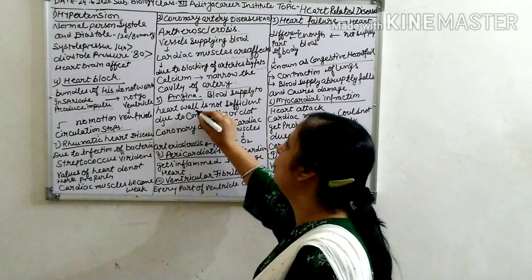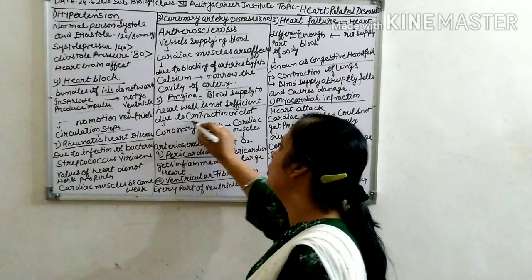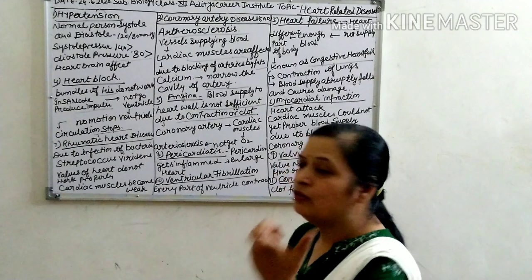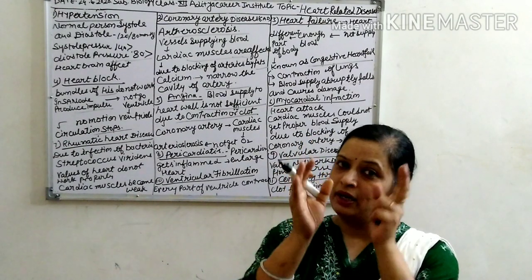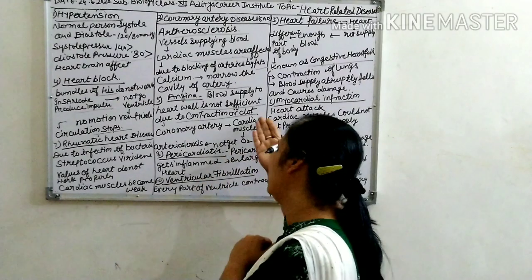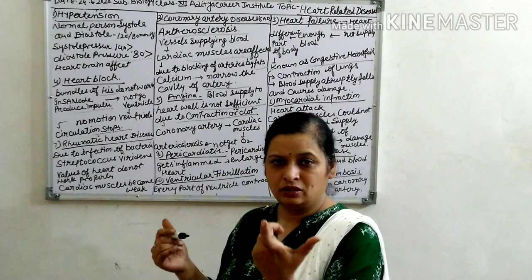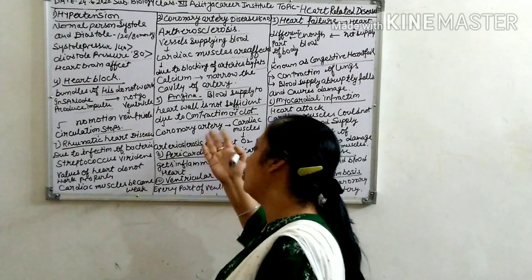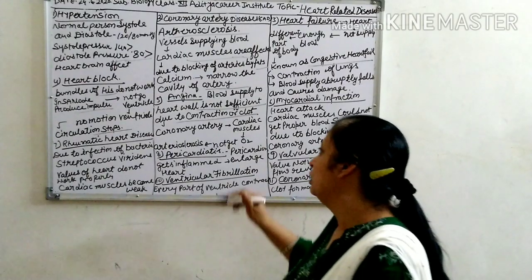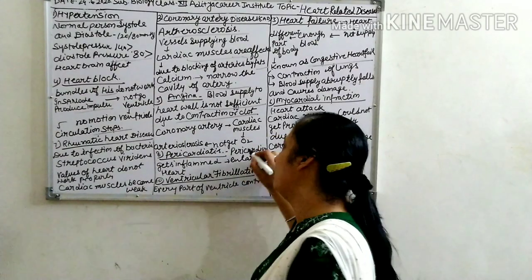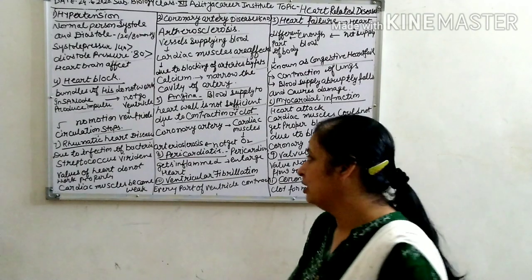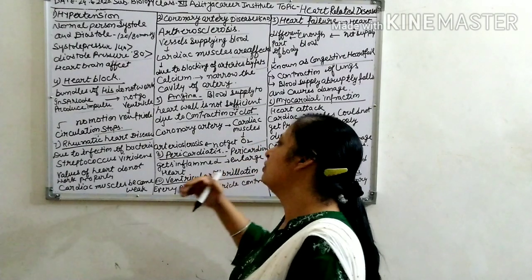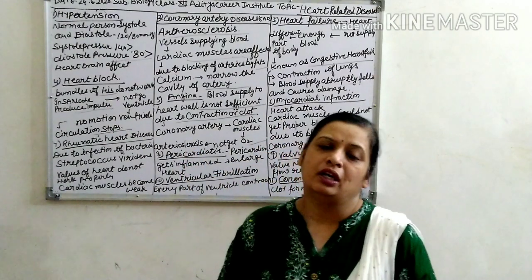Next is angina. Blood supply to the heart falls — it is not sufficient due to contraction or clotting of the coronary arteries. Blood clotting starts in the coronary arteries, so the cardiac muscles do not receive enough oxygen. This situation is also called atherosclerosis.